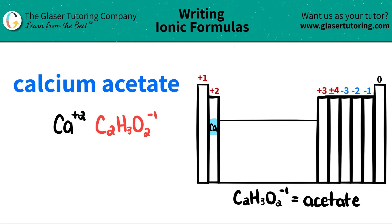Now since we have those charges, we're just going to crisscross them to determine how many of each component I need in my formula. So this plus two crisscrosses down, telling me that I need two acetates, and this negative one crisscrosses down telling me that I need one calcium.